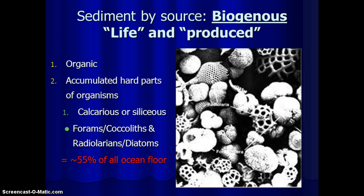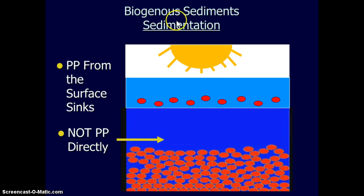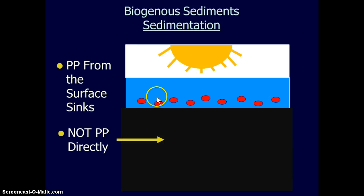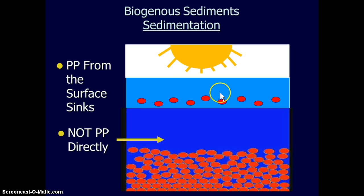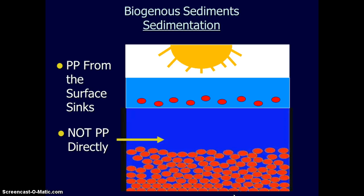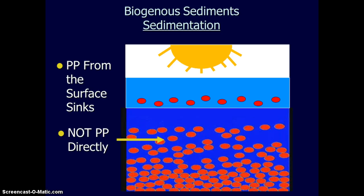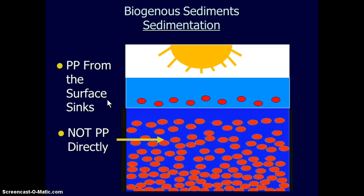Biogenous accounts for around 55% and lithogenous around 45%, which basically makes up nearly 100% — with a very small less-than-1% making up the rest. Biogenous sediments form through sedimentation: life grows in the surface ocean, and when organisms die, they settle out through the water column to the bottom, forming the sediments. Primary production (P.P.) is really the main source of organisms that settle, though not exclusively, and we'll talk about that more in a later lecture.